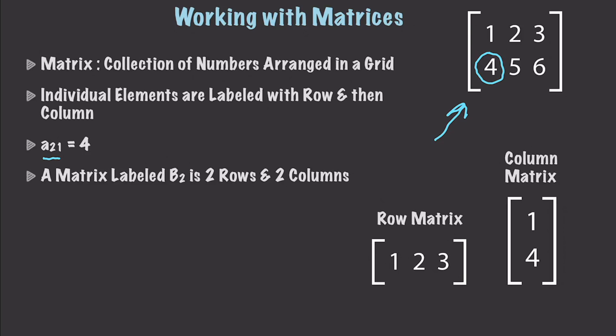And in situations where you have a single number like B2, that refers to the fact that this matrix has two rows and two columns. You also have row matrices, which only have a single row, and then you have column matrices, which are made up of just a single column.